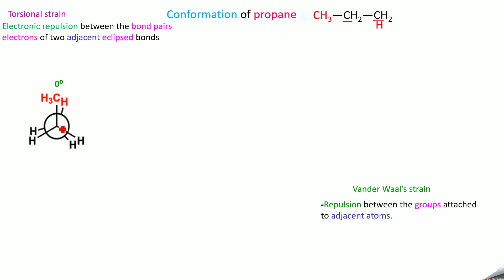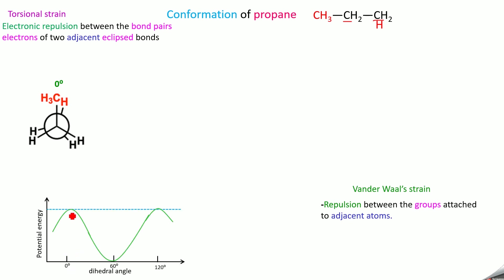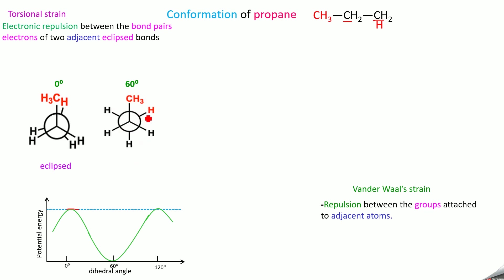Due to torsional strain and Van der Waals strain, there is high discomfort in the molecule and the potential energy is high. Looking at the potential energy diagram, at 0 degrees we have very high potential energy — this eclipsed form is highly unstable. Now, fix the front carbon and rotate the back carbon. The potential energy decreases and reaches a minimum value at 60 degrees. At 60 degrees, all groups are very far away so torsional strain and Van der Waals strain are absent; the potential energy is minimum and this is the stable staggered form.